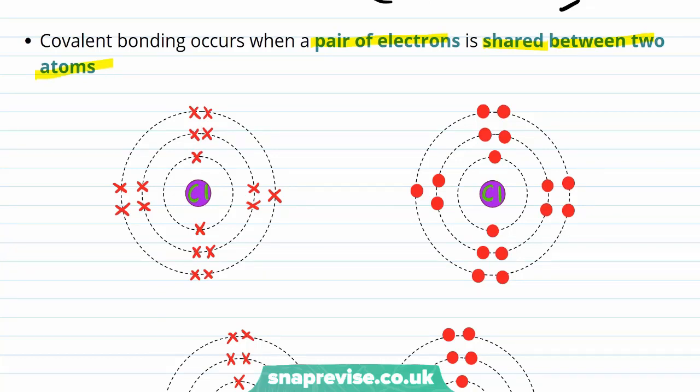Again, let's look at an example. This time we have two atoms of chlorine. And we can see that, yet again, both have seven electrons in their outer shell. Although this time we've drawn one with crosses and one with dots to help us see what happens to the electrons in the formation of a covalent bond.